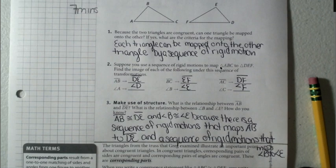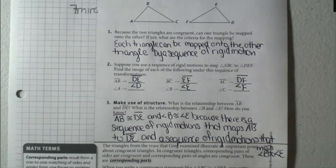All right, the answers to question one, two, and three have been provided. In number one, I state each triangle can be mapped onto the other triangle by a sequence of rigid motions.